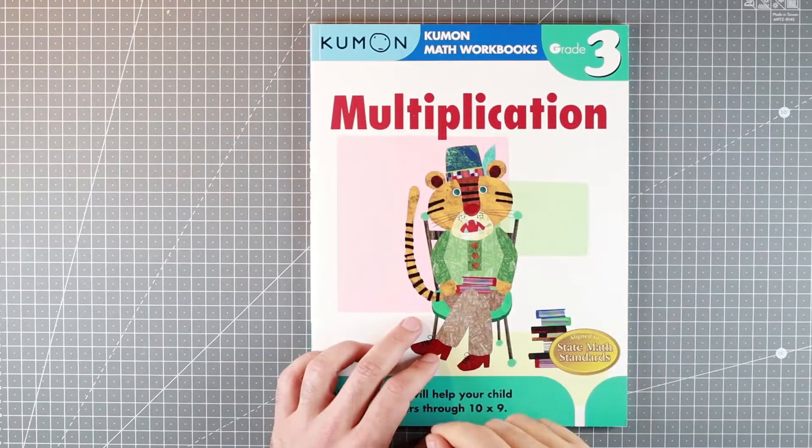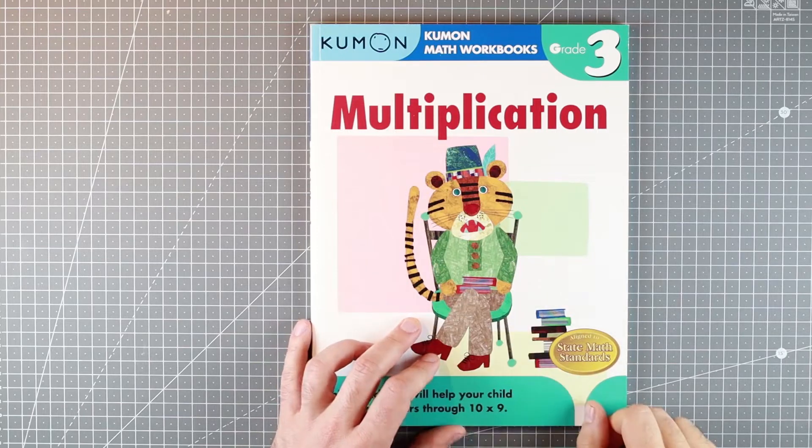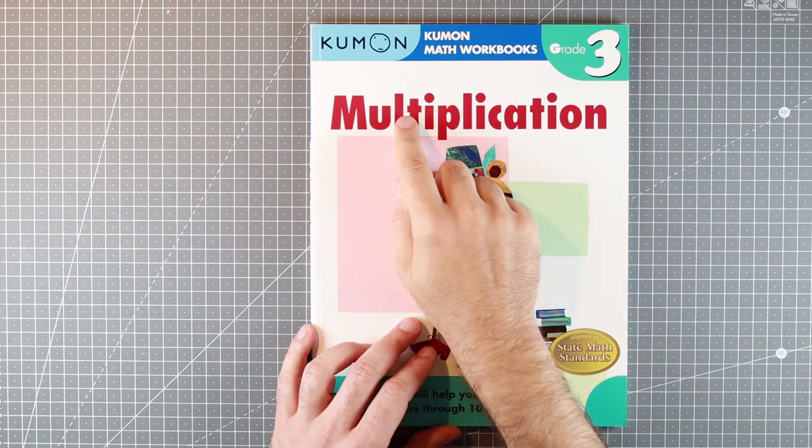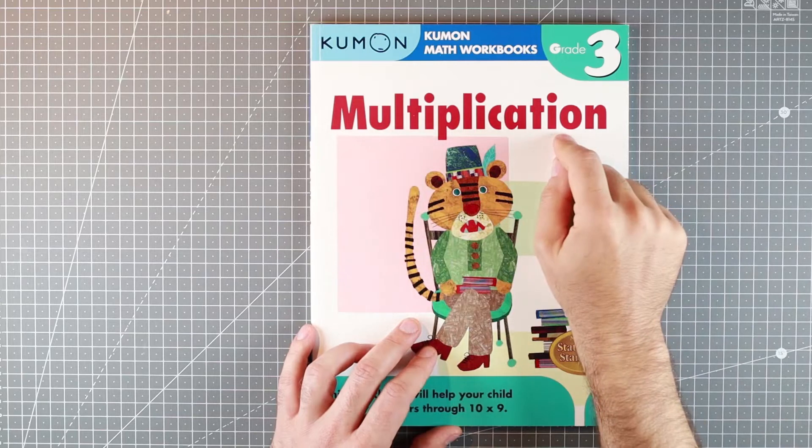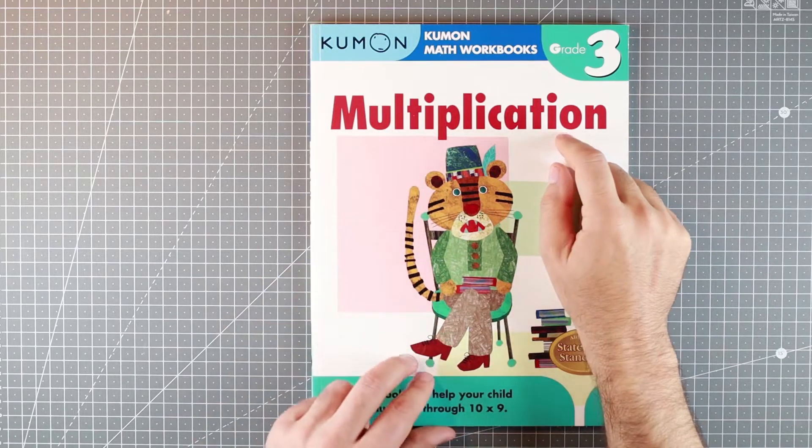You stop paying attention to the covers after a while, but this is one scary tiger on the cover of Kumon Multiplication Grade 3 Math Workbook. Welcome back to Books for Donkeys.